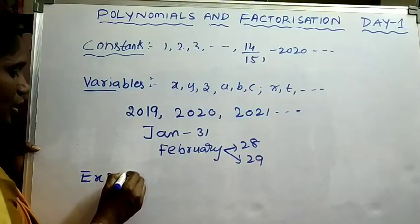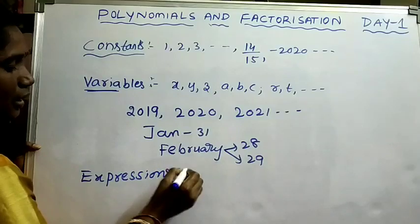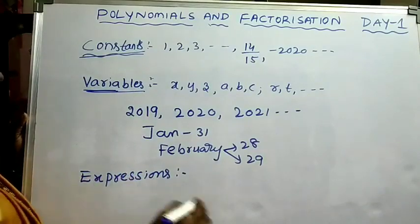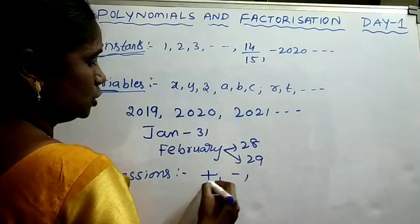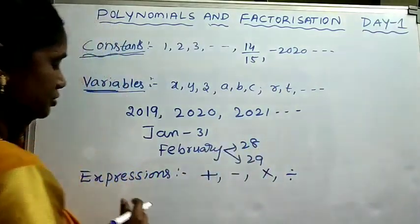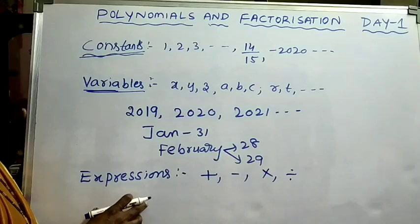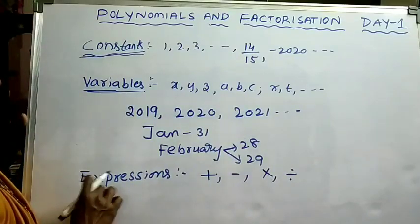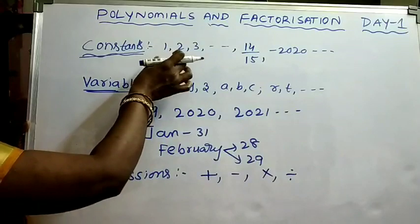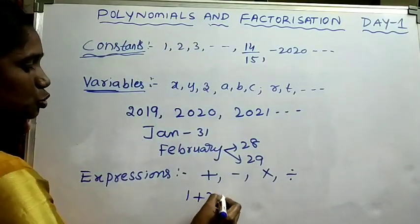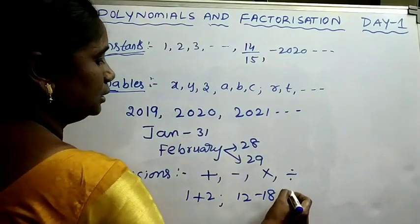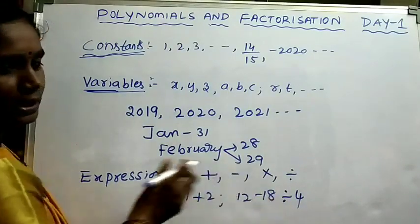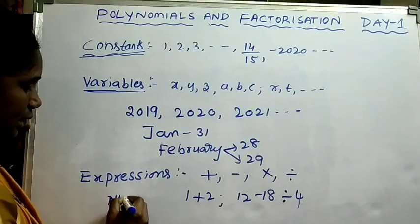Next, expressions. What are expressions? Expressions means a combination of constants and variables connected by the four mathematical operations: plus, minus, multiplication, and division. If we combine only constants — for example, 1 plus 2, or 12 minus 18 divided by 4 — those are called numerical expressions.